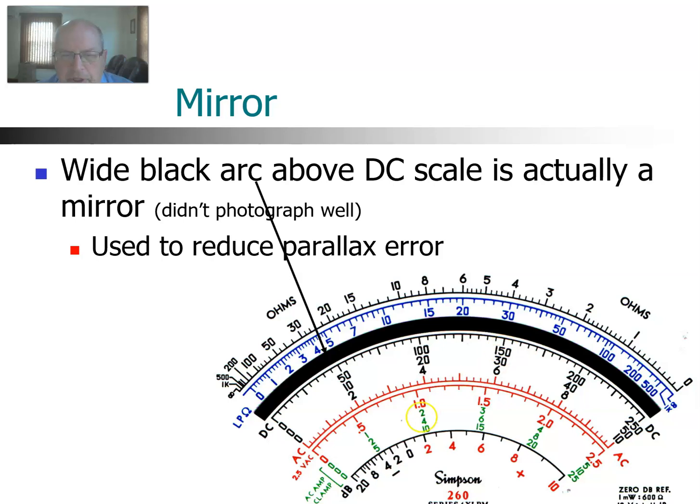You will also see on this illustration this arc here. Actually what that is, is a mirror, and the mirror is there to reduce parallax error. When you put your face above the scale here, you should see the indicator, but you should not see the indicator reflected in the mirror. If you see a reflection of the indicator, that tells you your face is not perpendicular to the meter and you're going to get parallax error. The reflection of the indicator should be directly under the indicator, and that removes any parallax error. You should not see the reflection of the indicator; it should be hidden by the indicator itself when you're reading this correctly.